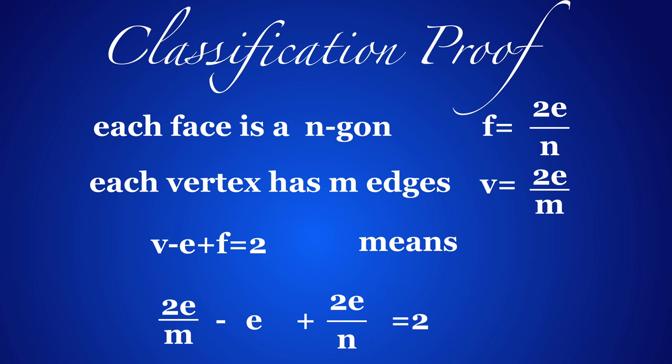We have to introduce some notation. Assume the polygons in our polyhedron are n-gons, and assume that each vertex has degree m — meaning there are m edges attached to each vertex. If v is the number of vertices, e is the number of edges, and f is the number of faces, then v minus e plus f equals 2. We can write f as 2e over n, because every edge shares exactly two faces, and the number of vertices as 2e over m, as every edge shares two vertices. We can now substitute f and v into the Euler formula.